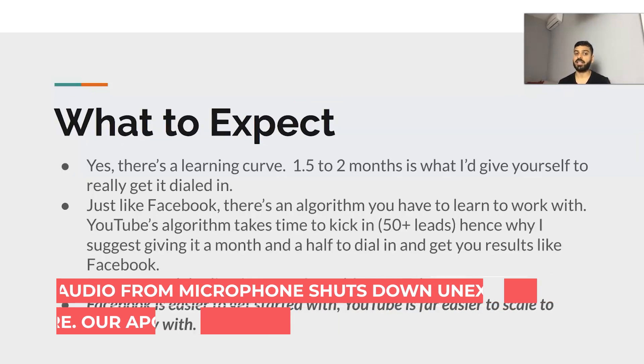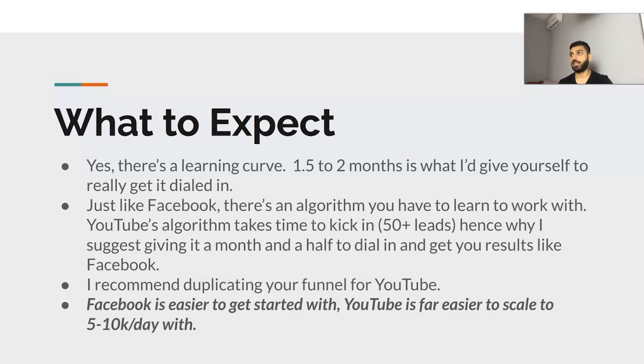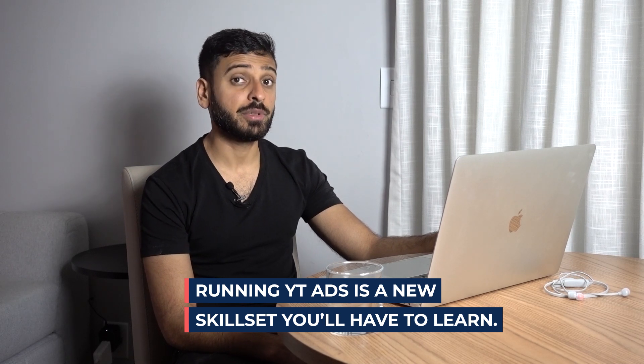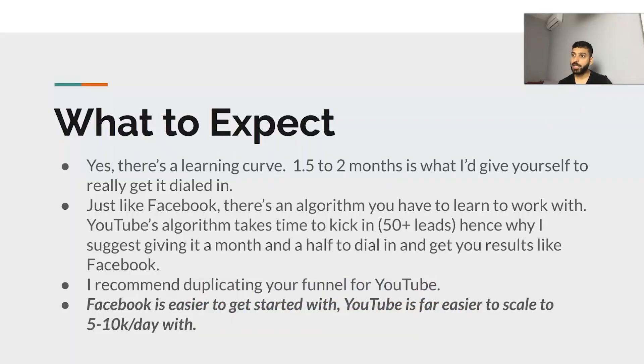What to expect? There is a pretty big learning curve. One and a half to two months is what I'd give yourself to get it really dialed in. You don't just go on YouTube and start running campaigns and be profitable right off the bat. There's an algorithm you have to learn to work with, and it takes time to kick in. You need at least 50 leads before you can start using Target CPA, which is my preferred form of bidding — it works kind of like Facebook's conversion optimization.